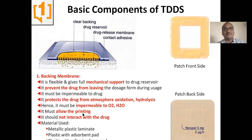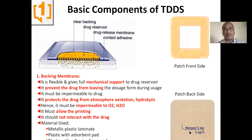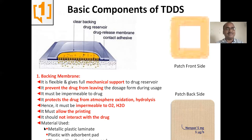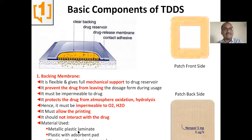The backing membrane must also allow printing. You can find prints on the patch such as drug name, strength (e.g., 5 mg), and release rate (e.g., 5 micrograms per hour). This helps patients identify patches easily. The manufacturer prints on the backing membrane. It should not interact with the drug — if it starts interacting, the drug will be deteriorated. Examples: metallic plastic laminate, plastic with absorbent pad, plastic with adhesive foam pad.